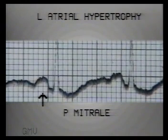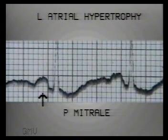This is another example of P mitrale — not notched, but 3 small squares wide, still meeting the width criterion for left atrial hypertrophy.